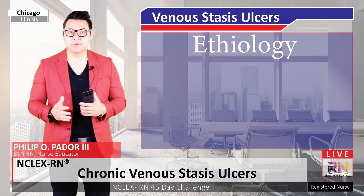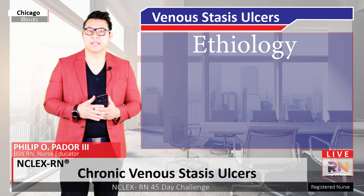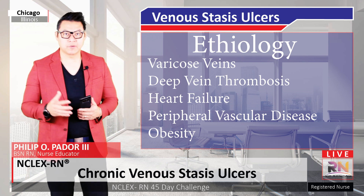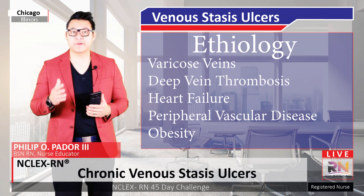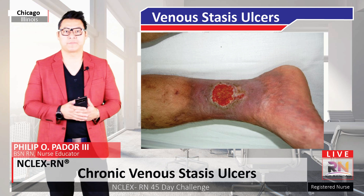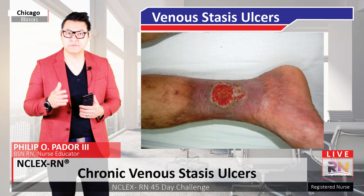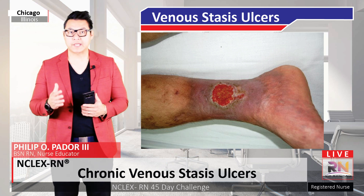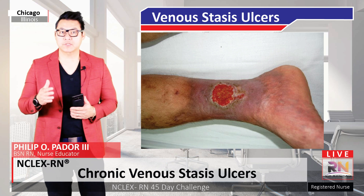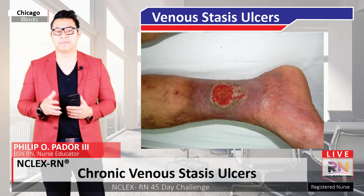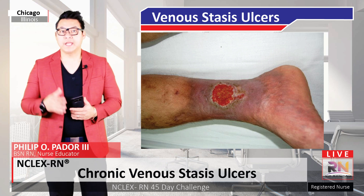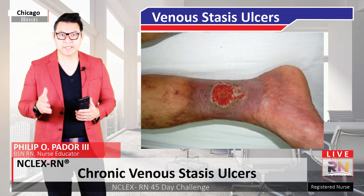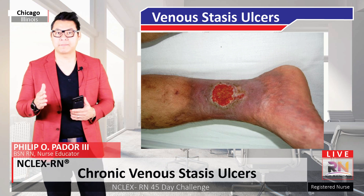Any condition that causes blood to pool in the veins of the legs is a potential cause of venous ulcers, including varicose veins, deep vein thrombosis, or heart failure, which are all different diagnoses of a venous ulcer. Most venous ulcers are caused by venous valves that do not properly prevent the backflow of blood, also known as venous reflux, from the deep veins back to the superficial veins located between the skin and the muscle. In addition, any condition resulting in muscle weakness in the lower leg can decrease the skeletal muscles' effectiveness in propelling blood back to the heart.